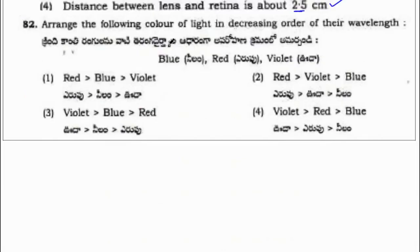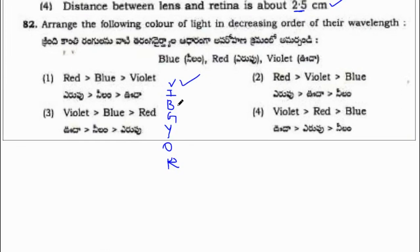Arrange the following colours of light in decreasing order of their wavelength. The wavelength order in VIBGYOR means decreasing order is: violet is greater than blue is greater than red.